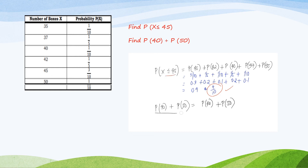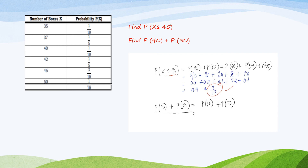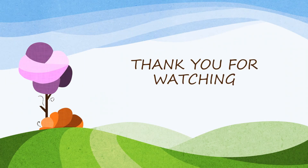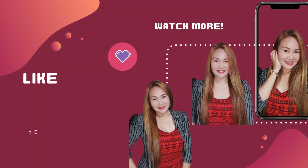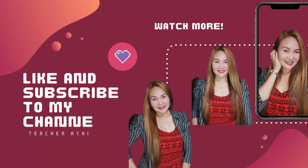Moving on to the next one: let us get the sum of the probability of 40 and the probability of 50. P(40) = 1/10 and P(50) = 1/10, so P(40) + P(50) = 2/10 or 0.2. Thank you for watching and happy learning! Please like and subscribe to my channel.